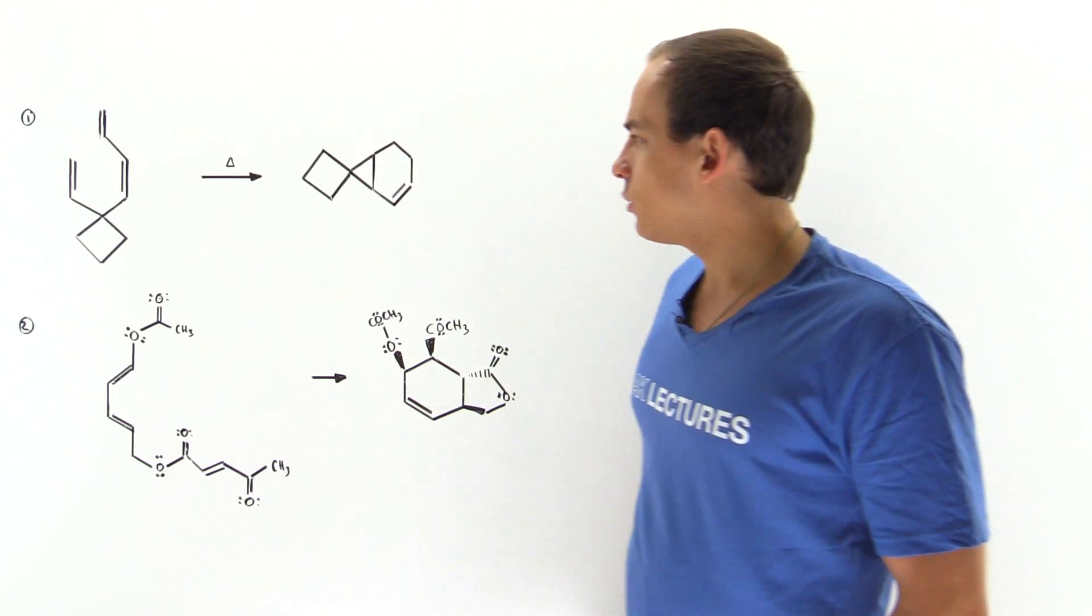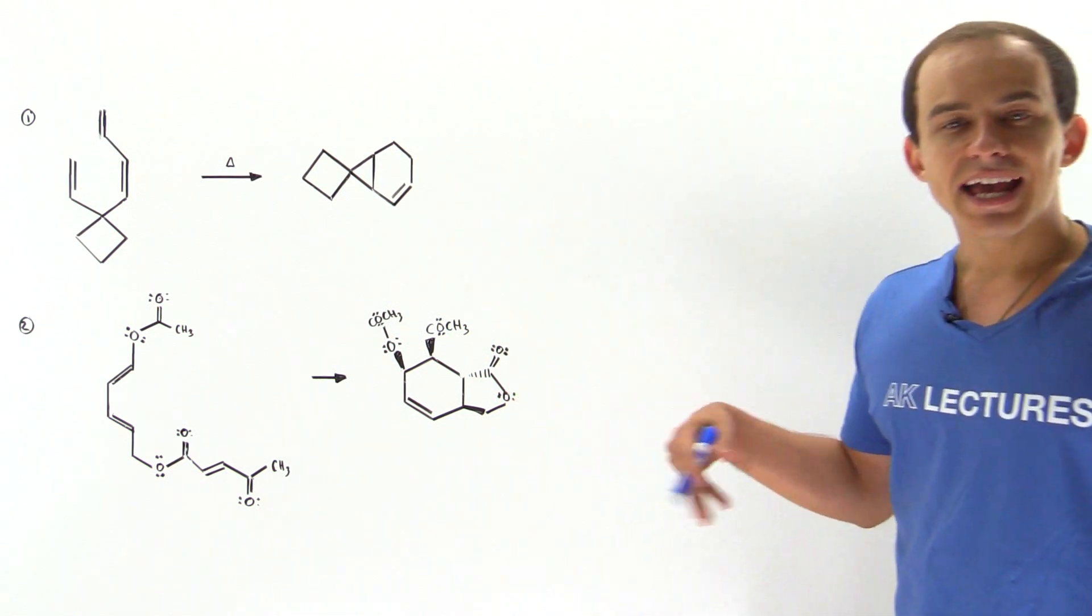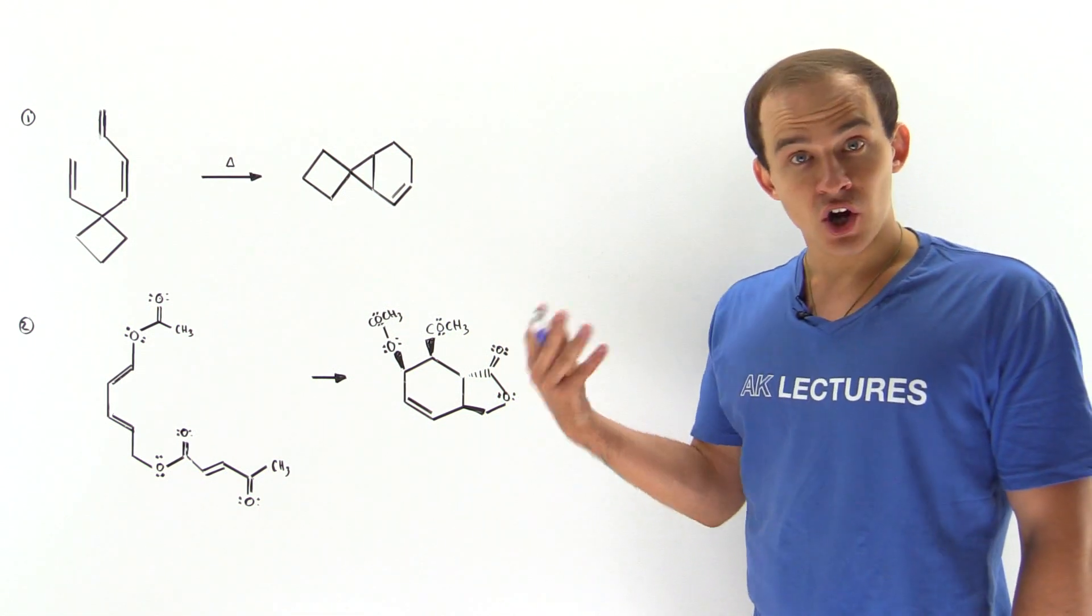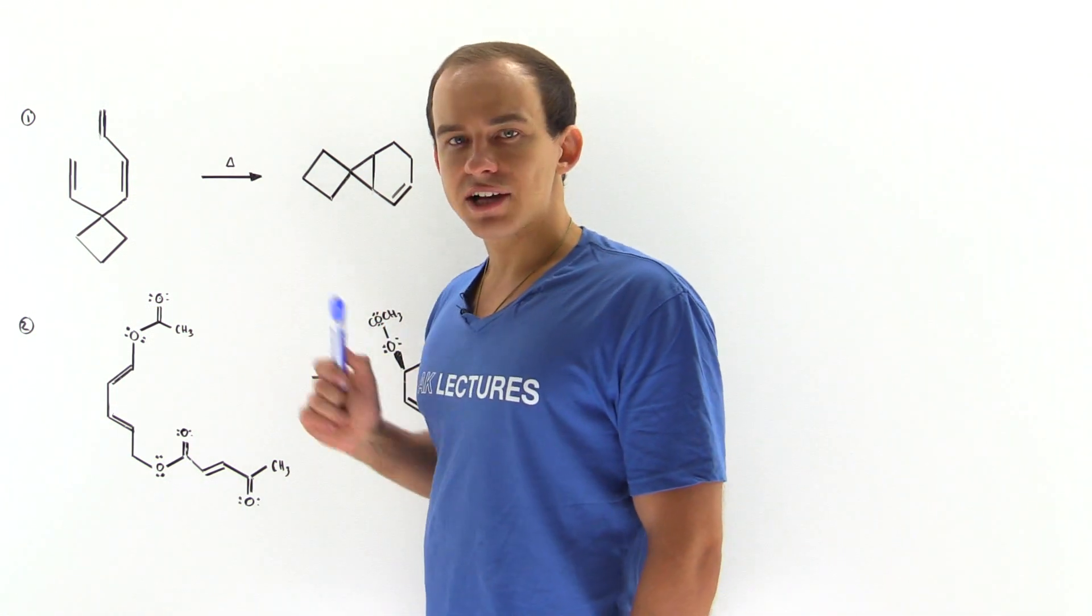Let's take a look at the following two examples in which we're going to deal with intramolecular and internal Diels-Alder reactions. So let's begin with reaction one.